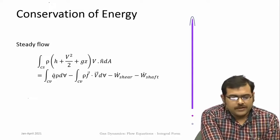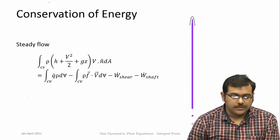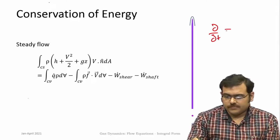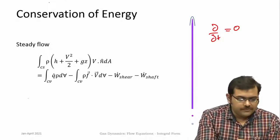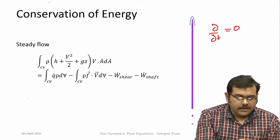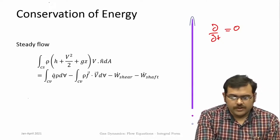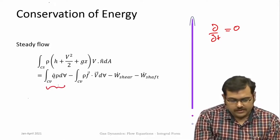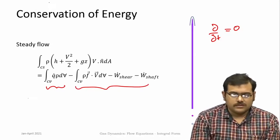For steady flow — where the system is not changing with time, so the partial derivative with respect to time within the control volume is 0 — you are left with only the fluxes across the control surfaces. The integral of rho times (h plus V²/2 plus gz) times V·n dA equals the heat added and work done by the system. This is the final conservation of energy equation.